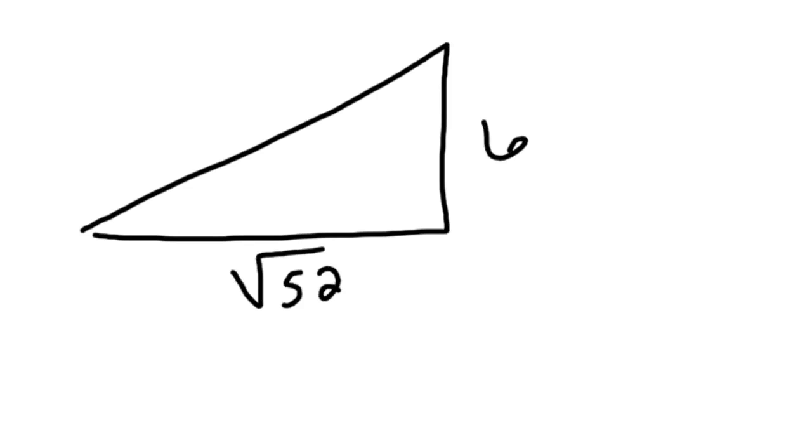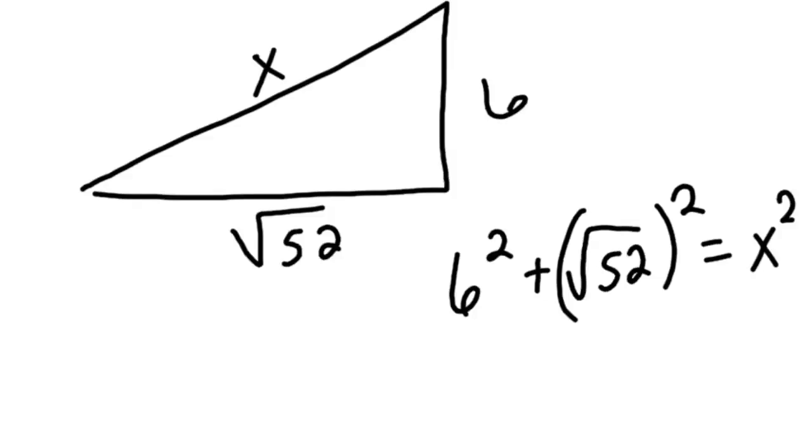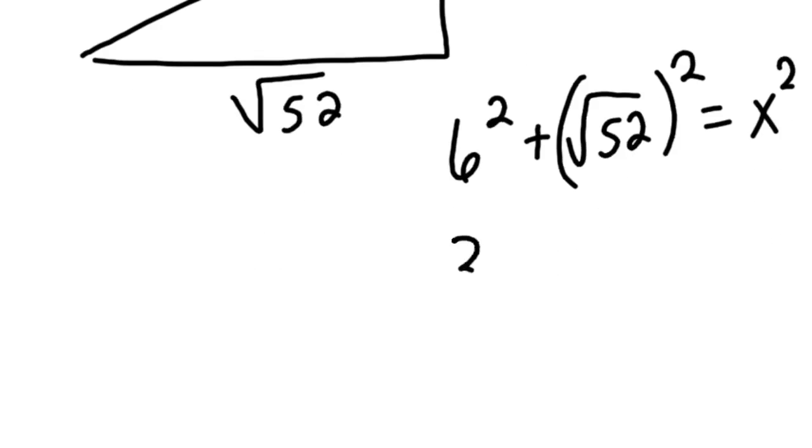So it looks like this. This was six. This was your shadow length. And we're finding that value there. So six squared plus the square root of 52 squared equals x squared. Now if you check that, that would be 36 plus 52, which is 88.